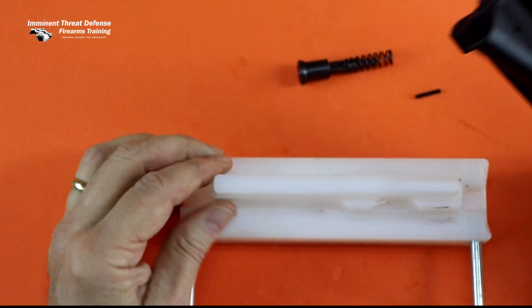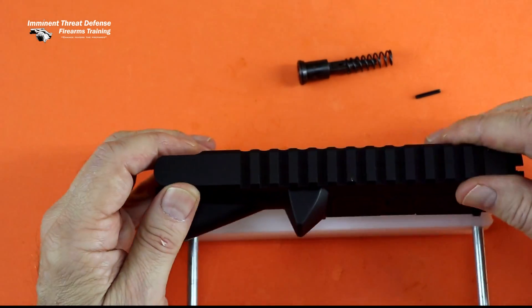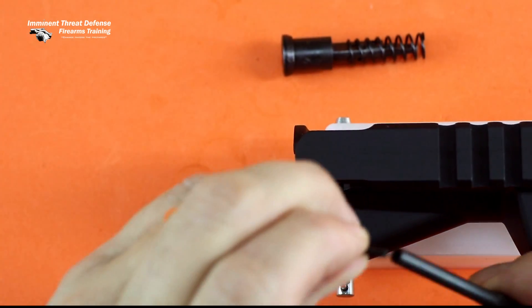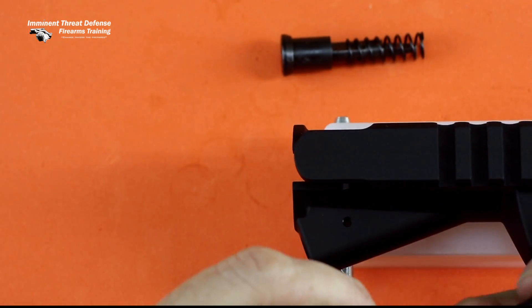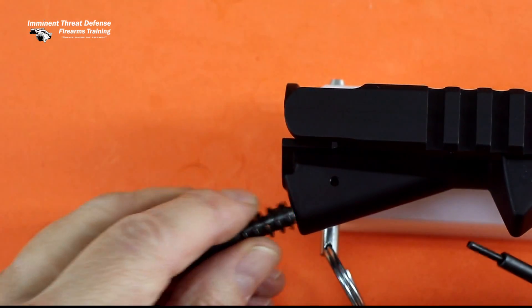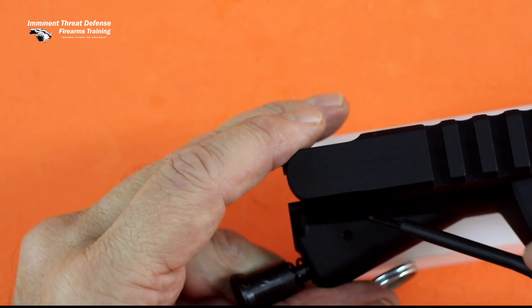This is a lot easier to do with a jig. It takes four hands. So I'll set it up and I'll get a roll pin starter here and get the pin started, and then I'll be able to finish it.